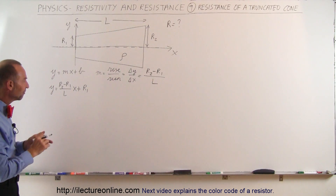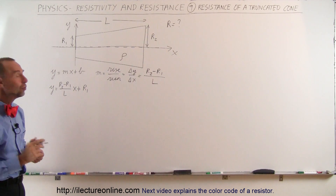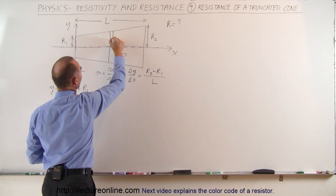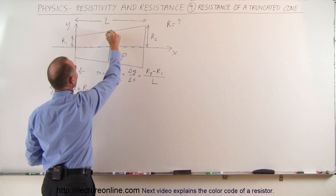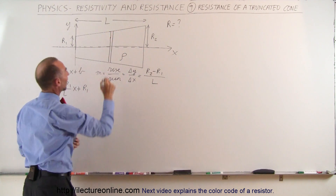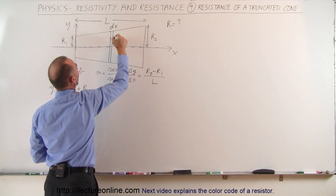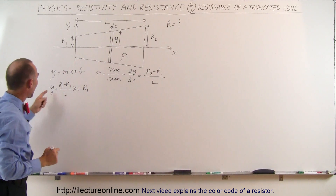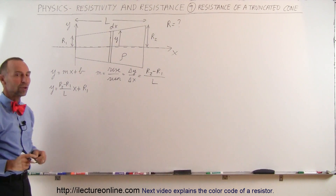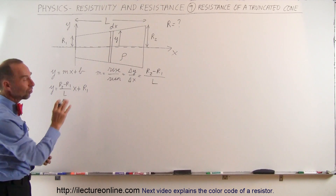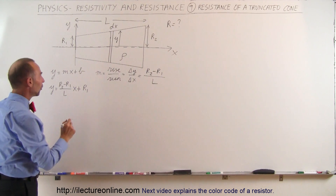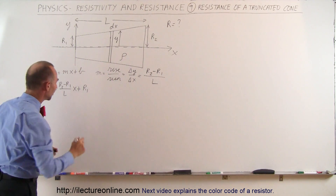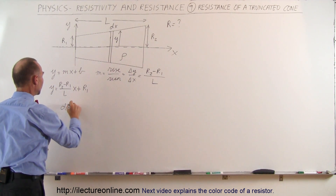Now I think we're ready to go ahead and find the resistance. What we're going to do is take a small little slice that has the thickness dx and radius y. So the radius of this slice would be y, and of course y is related to x with this equation right here. Since the slice is so thin, the radius doesn't really change over the small displacement dx.